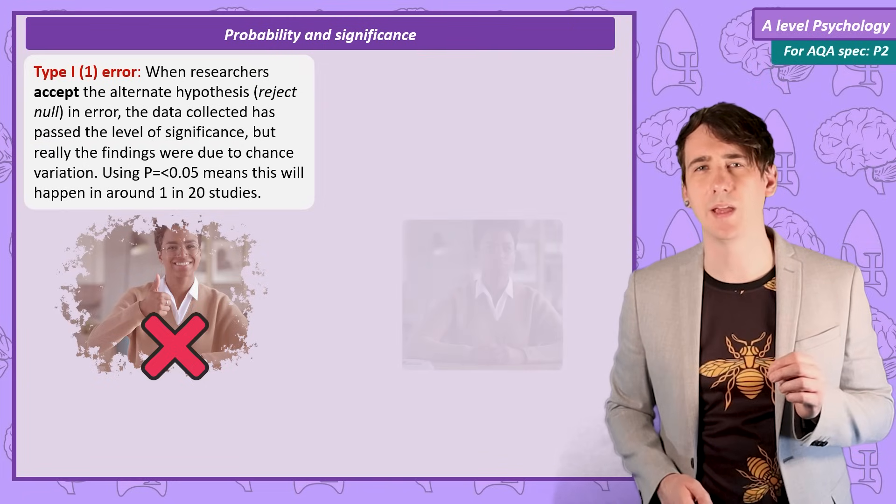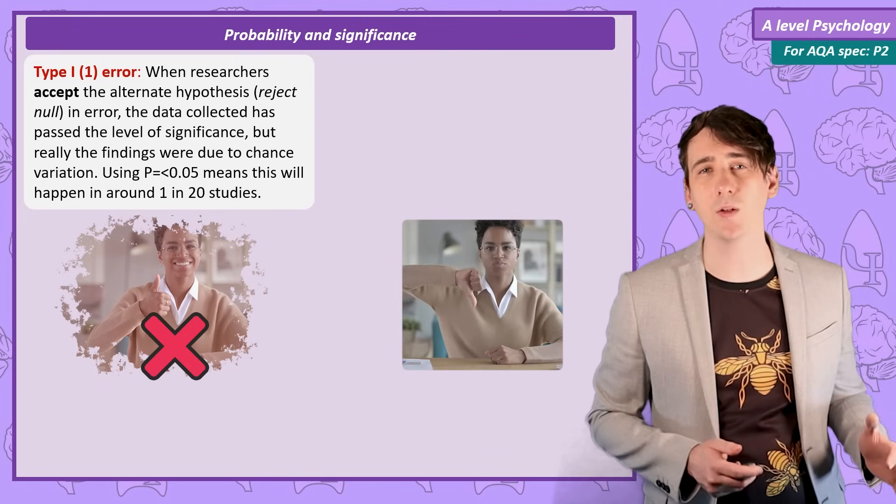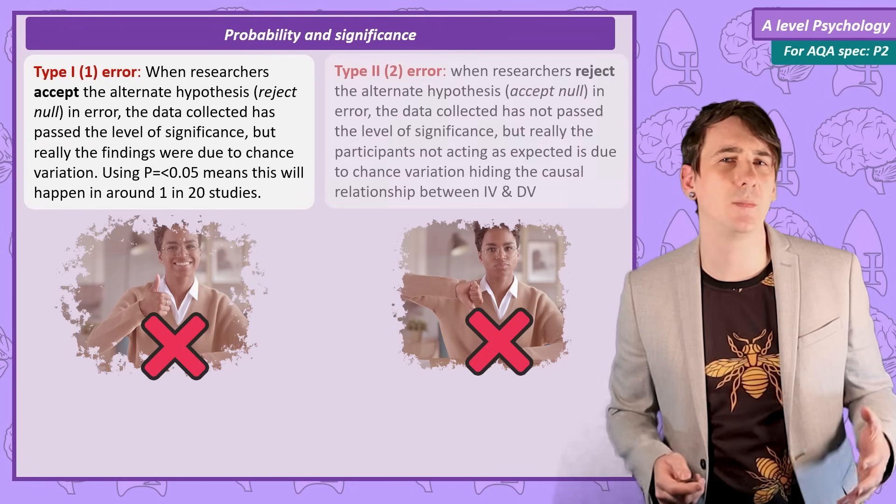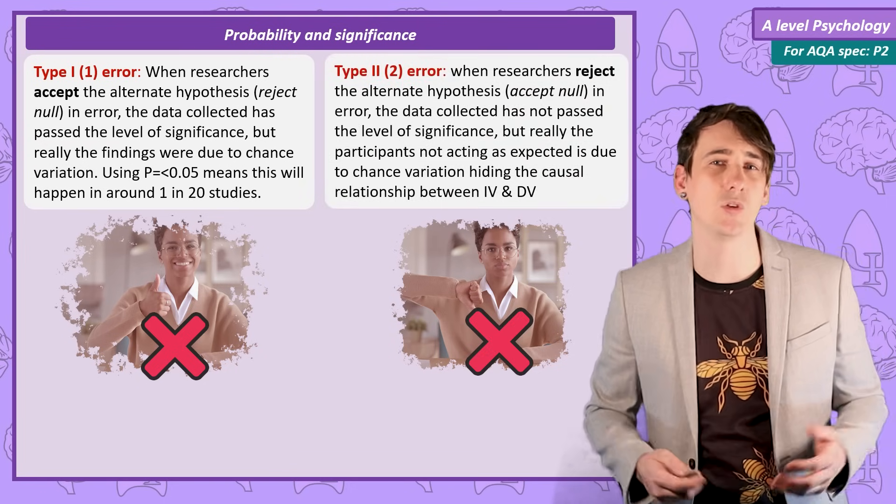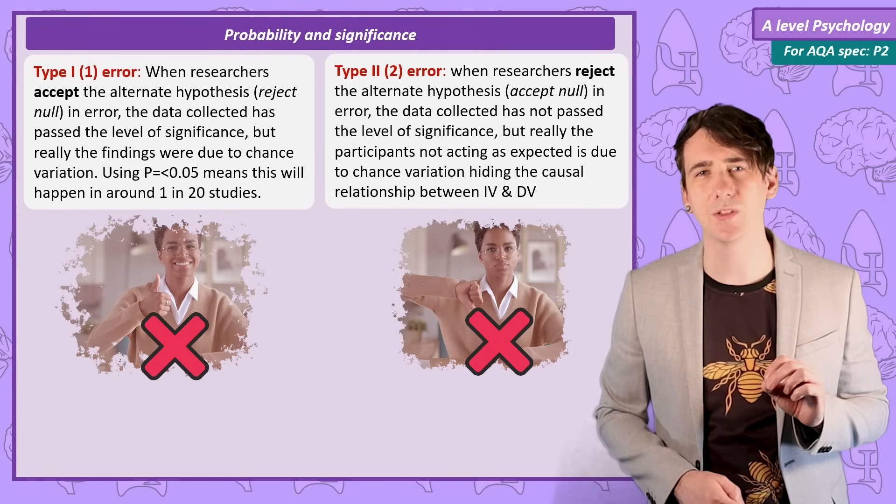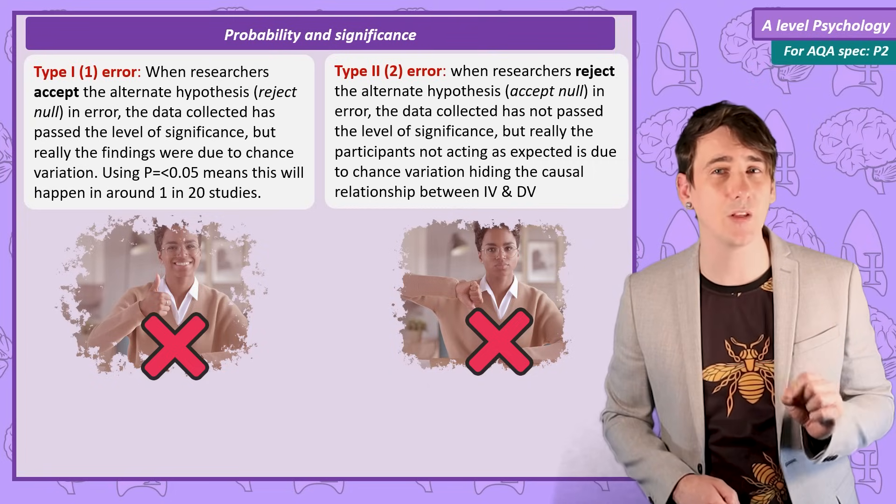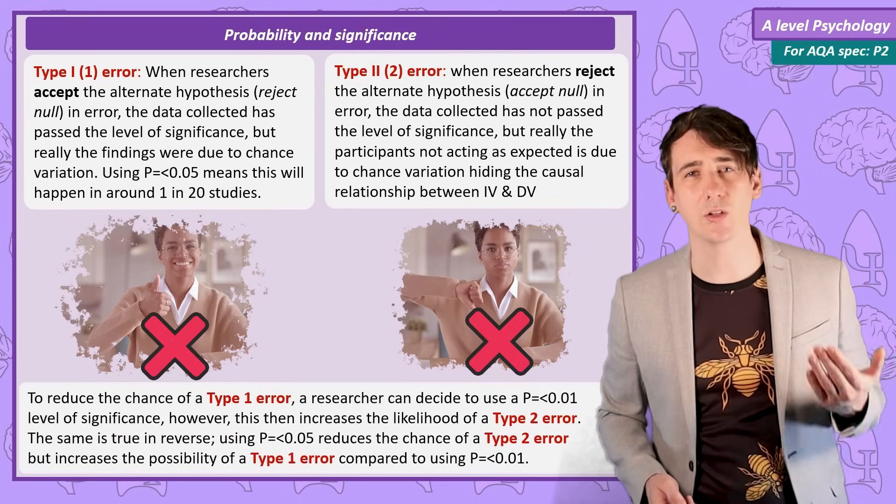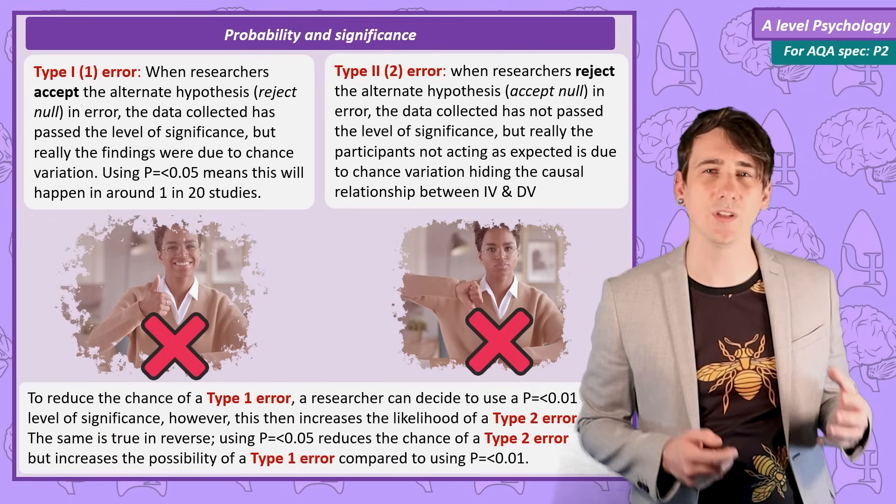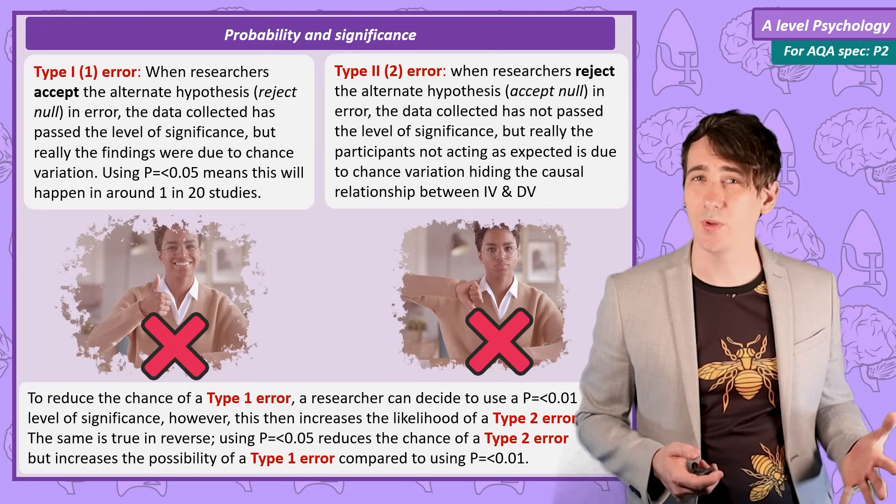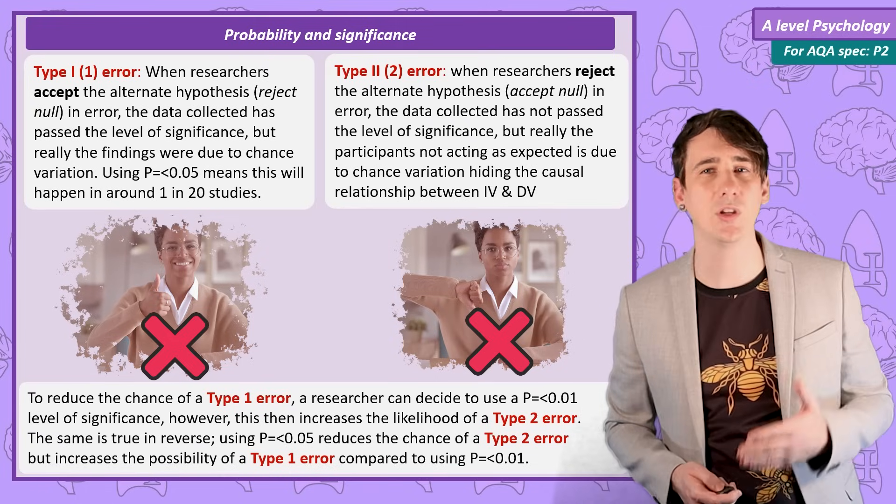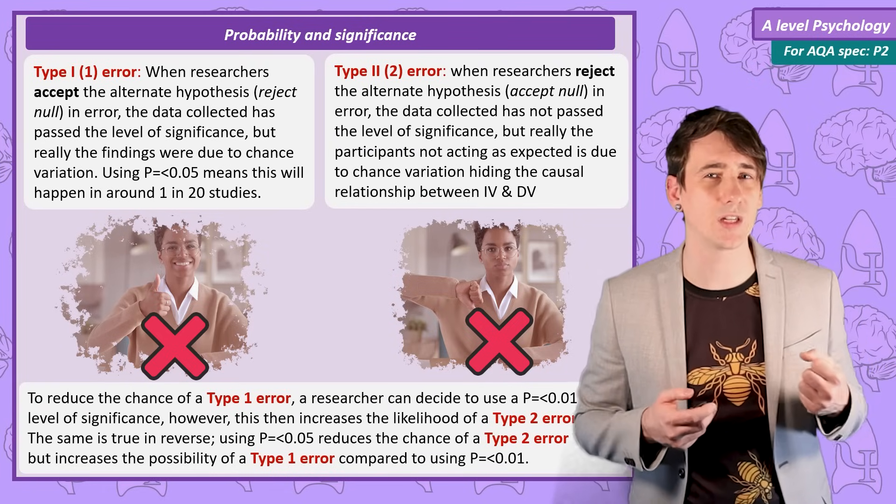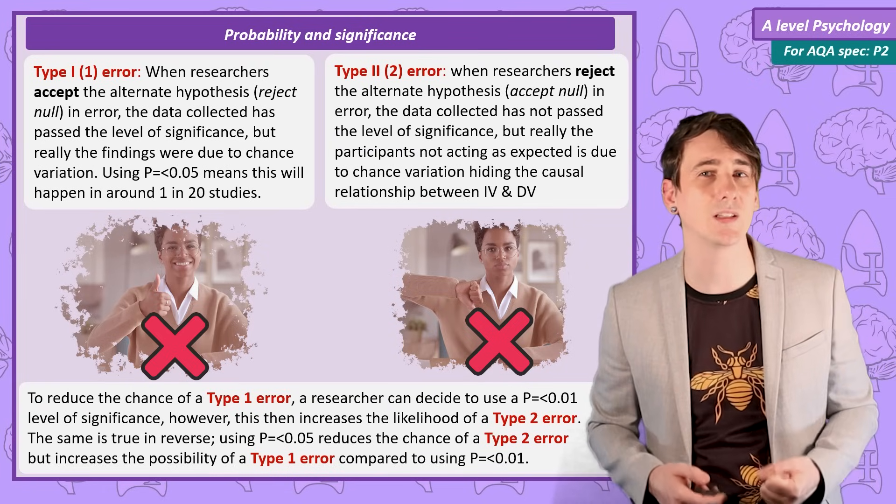But there is another mistake that can be made. You could reject a true alternate hypothesis because the data isn't strong enough. And too many participants didn't behave as expected just due to chance. Rejecting an alternate hypothesis when it's actually true is making a Type 2 error. The researcher has options. If they want to reduce the likelihood of a Type 1 error, they can use a stronger level of significance, say 0.01. The problem with this is it increases the likelihood of a Type 2 error. And the same is true in reverse. Using a 0.05 level of significance reduces the chance of a Type 2 error while increasing a Type 1 error.